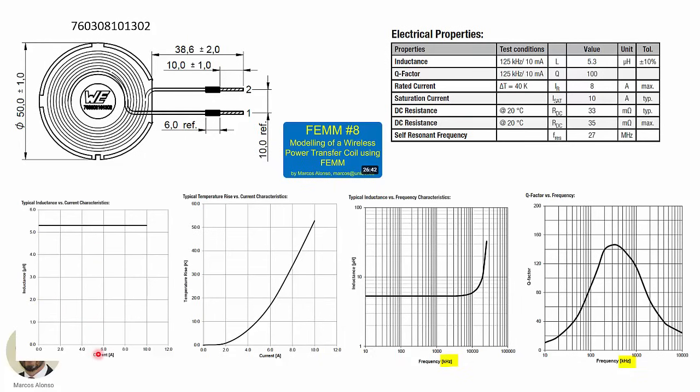The quality factor 100 at 125 kilohertz. And below we have some other characteristics: the inductance versus the current, the temperature rise versus the current, the inductance versus the frequency, and finally, the quality factor versus the frequency.